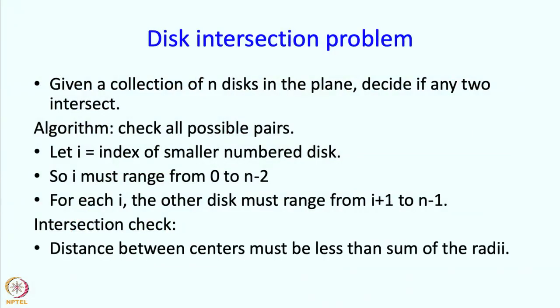So we want to find such i and such other disk numbers j so that j goes from i+1 to n-1 for every i which in turn goes from 0 to n-2. But that is basically it as far as deciding how do you go over all the pairs. And the intersection check is reasonably simple, the distance between the centers must be less than the sum of the radii. So we have all the information about the centers and about the radii and we just have to check that.